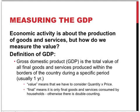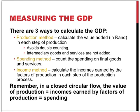Final means that it's only final goods and services that are part of this calculation. Otherwise, there would be double counting of value when you calculate the GDP. There are three ways to calculate the value of the GDP: the production method, the spending method, and the income method. In the case of the production method, we calculate the value added in each step of the production process. This avoids double counting and intermediary goods and services are excluded.